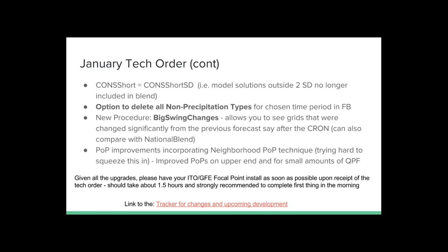We're providing a new procedure — I wrote it up after feedback from inside the office. A lot of times when Forecast Builder runs, you're wondering what changed in your forecast — it's kind of a black box. There's a new procedure called Big Swing Changes that you can compare either the current forecast or previous to the Superblend or the national blend. It will go through and highlight grids that have significant changes. Right now I've got it built in for max T, min T, POP, and QPF. It might be a way to look at targets of opportunity — something that's dramatically changing.